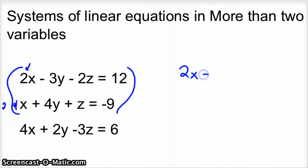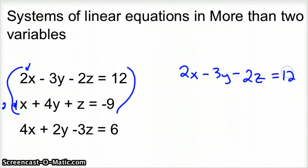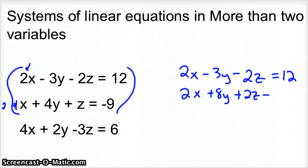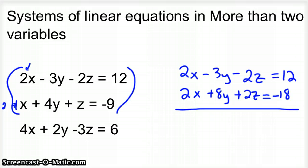So you'd have two x minus three y — I'm going to keep the top equation the same — minus two z equals twelve. And then I'm going to multiply the bottom equation by two, everything. So plus eight y, plus two z, minus eighteen. You want to be really careful that you don't make any mistakes. So then we wanted to eliminate our x's. Right now if you add these two equations, you're not going to eliminate them.